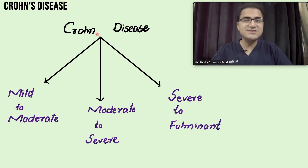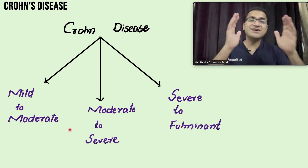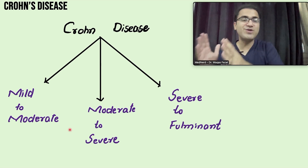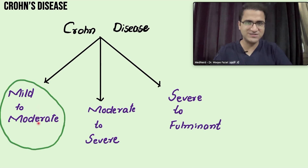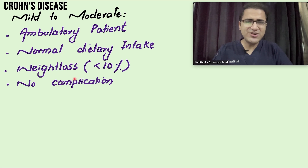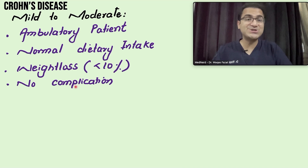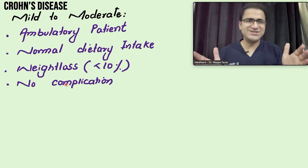We classify Crohn's disease into three states: mild to moderate, moderate to severe, and severe to fulminant. This classification is based on clinical symptoms, clinical presentation, and the presence or absence of complications. Mild to moderate Crohn's disease is where the patient is ambulatory, has normal dietary intake, has weight loss less than 10%, and has no complications like abscesses, strictures, or fistulas.